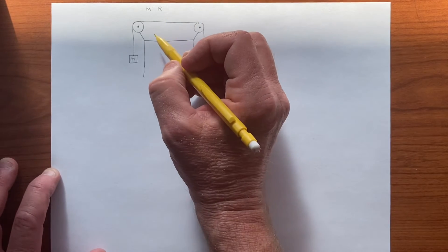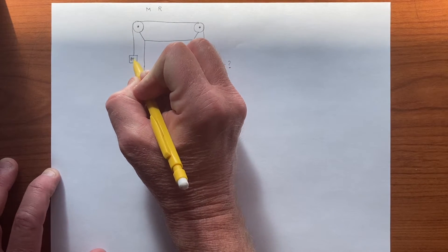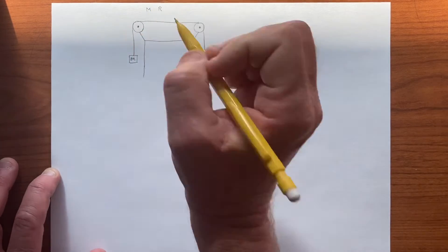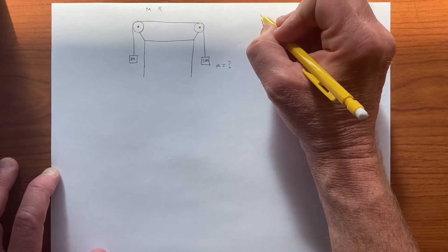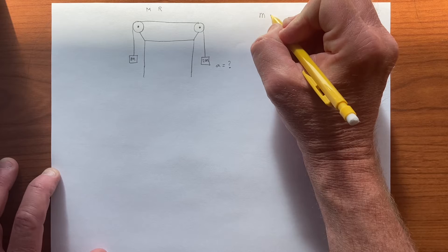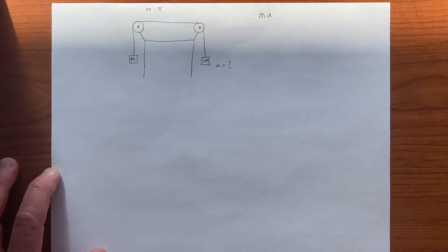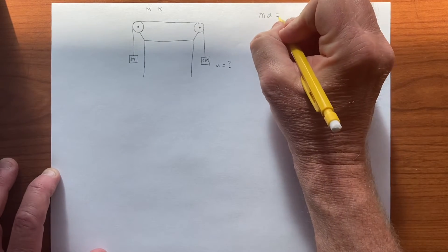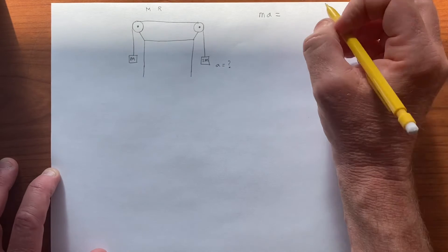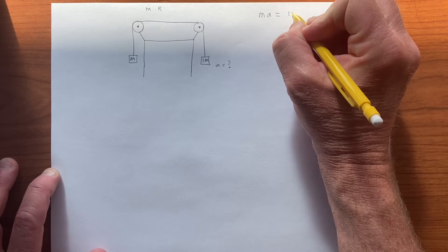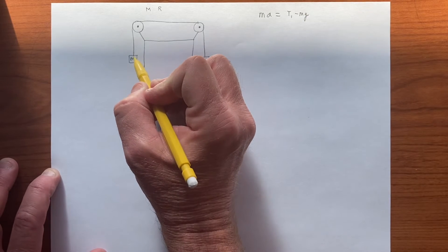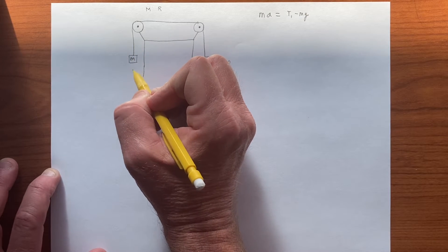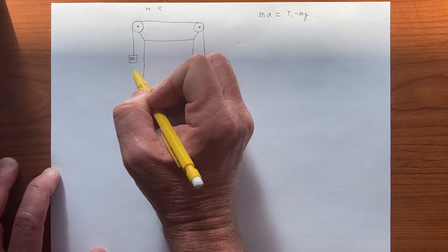But, so these are all m, and that's also m. And so we have four systems, m times a equals f, which in this case is t1 minus mg. So t1 is the tension upwards here, and mg is the force this way.